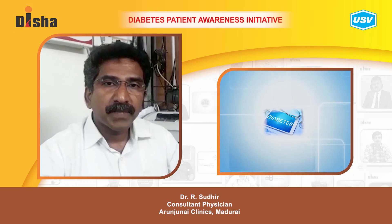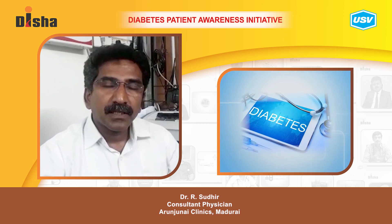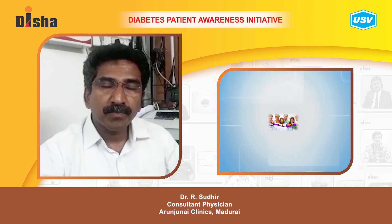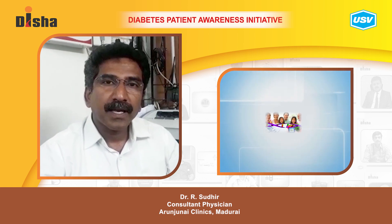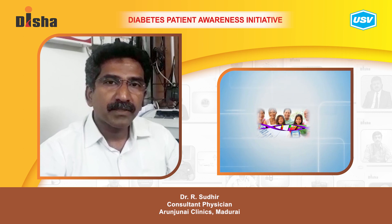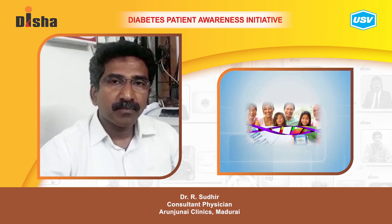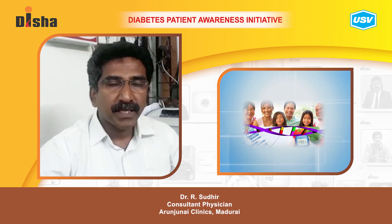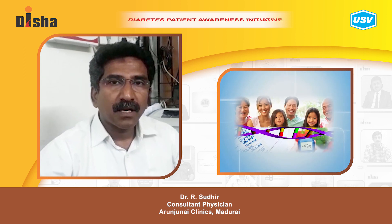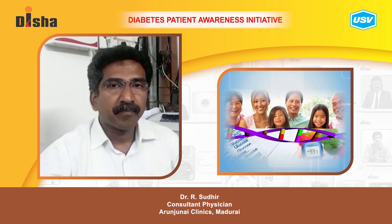Today we will be talking about prevention of diabetes. Diabetes has a strong genetic predisposition, and those whose parents are diabetic — or one parent is diabetic — are generally prone to develop diabetes. In such a situation, how can the next generation prevent diabetes in them?